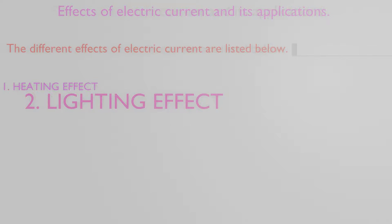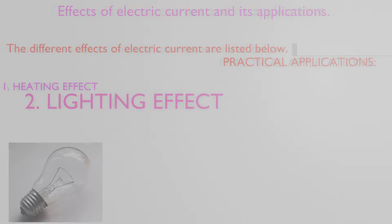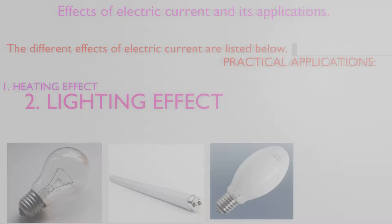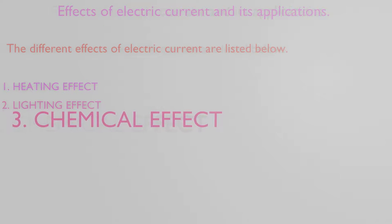Practical applications of the lighting effect: incandescent lamp, fluorescent bulb, mercury vapor lamp, LED, etc., work on this effect. Number three: chemical effect. When an electric current passes through a liquid, it may cause a chemical reaction to occur in the liquid — this is called electrolysis.